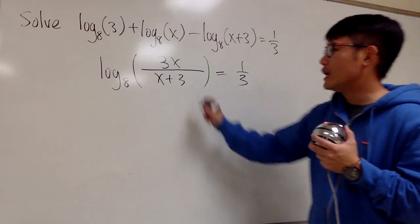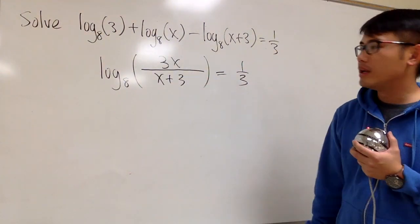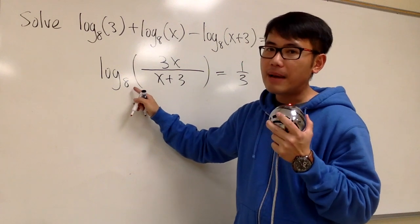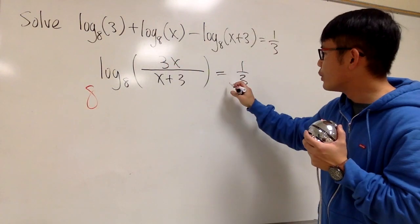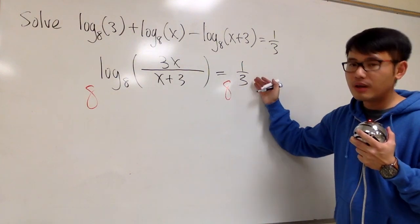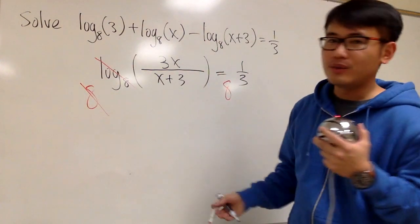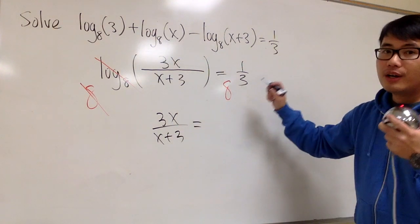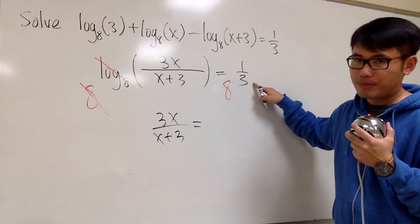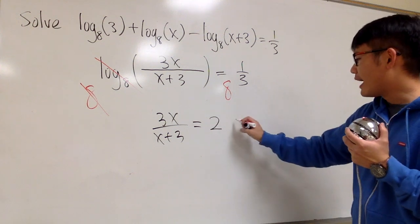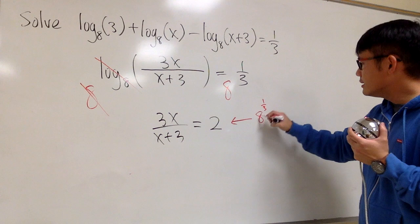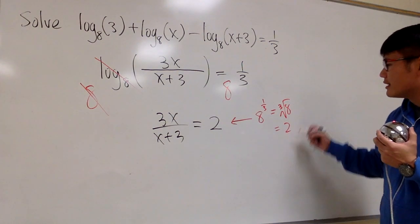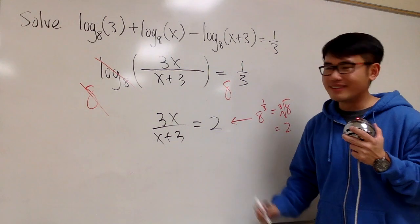We can proceed because we have a single logarithm with x inside equal to a number. What we are going to do is pretend both sides are exponents — the base here is 8, so I will do 8 to this power on both sides. The left-hand side is easy because 8 and the log base 8 will cancel, and we'll just have 3x over x plus 3. On the right-hand side, we have 8 to the 1/3 power. The result for that will be 2, because 8 to the 1/3 power means take the cube root of 8, and 2 times 2 times 2 is 8 — so the cube root of 8 is 2. Be sure you work this out as a power: 8 to the 1/3.